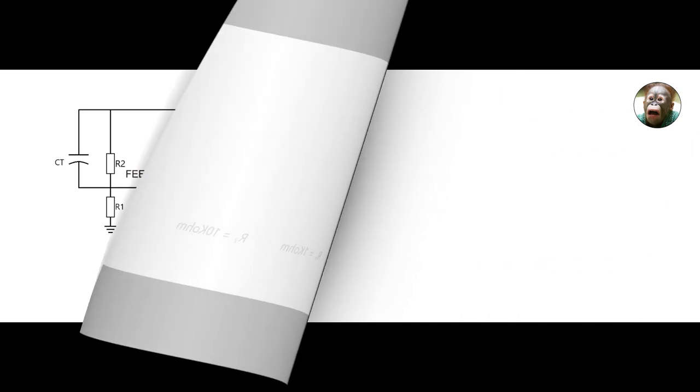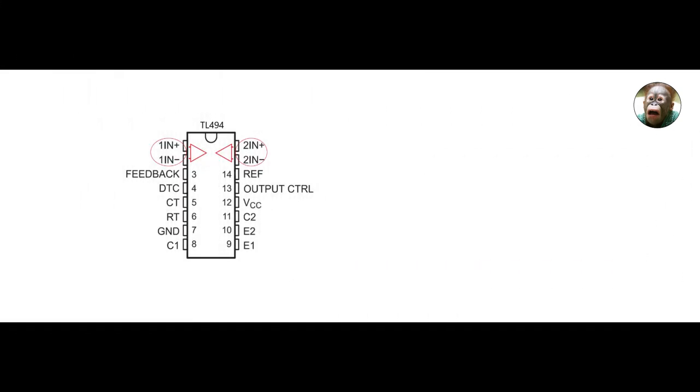The TL494 contains two internal error amplifiers which are usually used to control the output voltage and also for over current protection. To control the output voltage, we connect a potential divider to it so that the value of our two resistors gives us 2.5 volts.